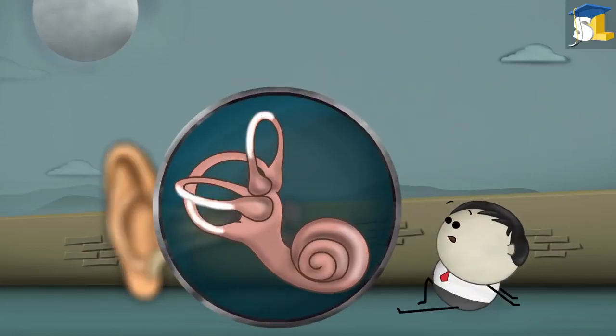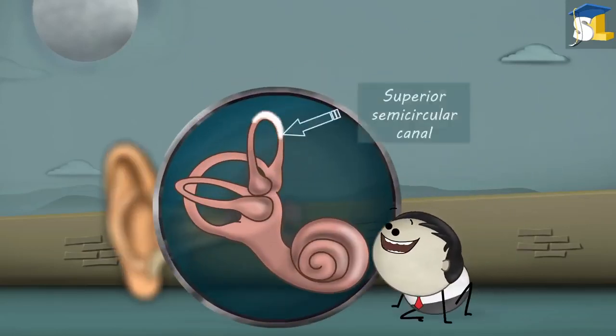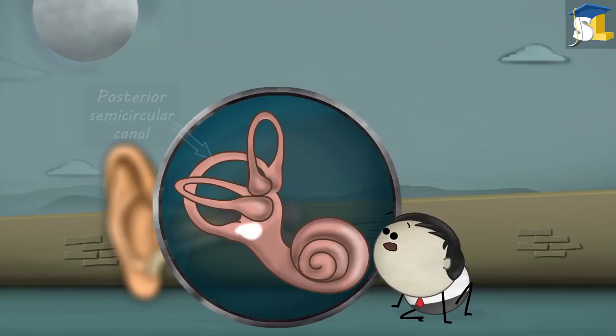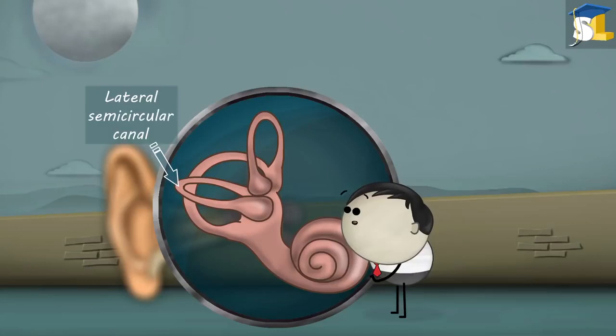The inner ear consists of three semicircular canals called superior semicircular canal, posterior semicircular canal, and lateral semicircular canal.